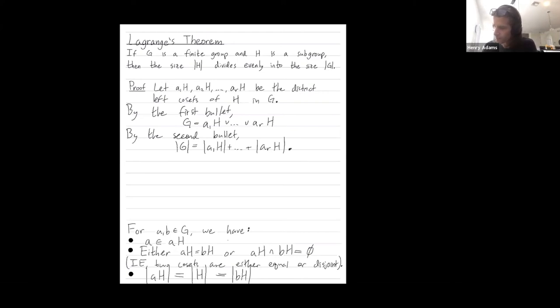Why is this? Cosets are either equal, in which case they're not distinct, right? They're not different cosets, they're just the same coset, or they're disjoint. Okay. So cosets are either equal or they're disjoint.